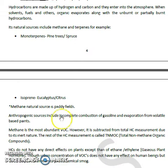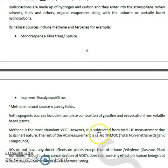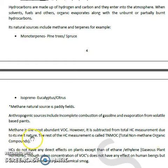Anthropogenic sources of these hydrocarbons include incomplete combustion of gasoline and evaporation from volatile-based substances. Methane is the most abundant VOC. However, it is subtracted from the total hydrocarbon measurement due to its inert nature. The rest of the hydrocarbon measurement is called TNMOC — total non-methane organic compounds.